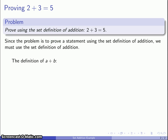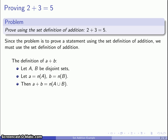So how do we define a plus b according to the set definition? Well, that's going to start by taking two disjoint sets A and B. Then a is going to be the cardinality of the first set, b is going to be the cardinality of the second set, and then my definition a plus b is going to be defined to be the cardinality of the union of those two sets.